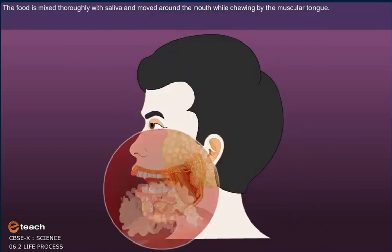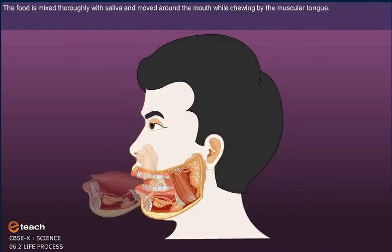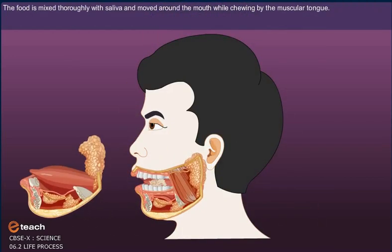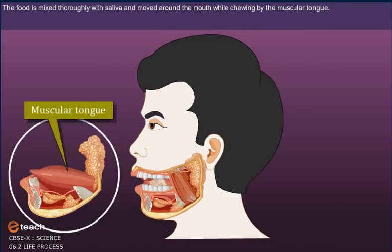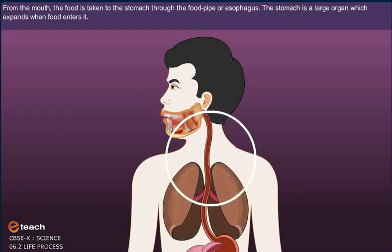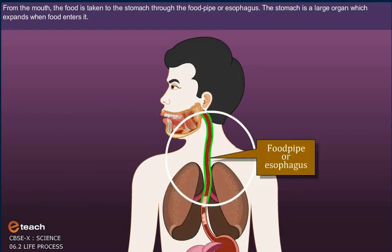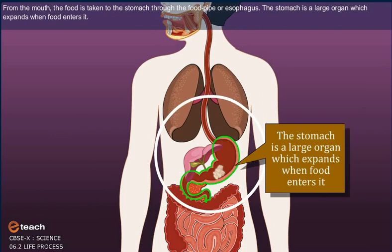The food is mixed thoroughly with saliva and moved around the mouth while chewing by the muscular tongue. From the mouth, the food is taken to the stomach through the food pipe or esophagus.